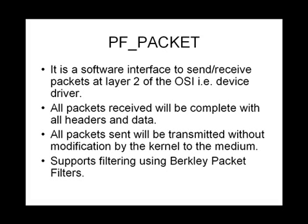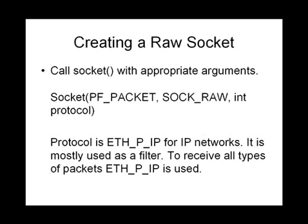Some filtering is also supported on the PF_PACKET software interface using Berkeley packet filters — we will discuss that a little later. Now, how do you create a raw socket? Creation is very easy. It is just the same socket call, but with the first argument, the family, set to PF_PACKET, and the type set to SOCK_RAW. These two are fixed. Finally, the protocol field of the socket call depends on which protocol you want to receive or send packets of. For IP networks it is normally ETH_P_IP, but to receive all types it is ETH_P_ALL.